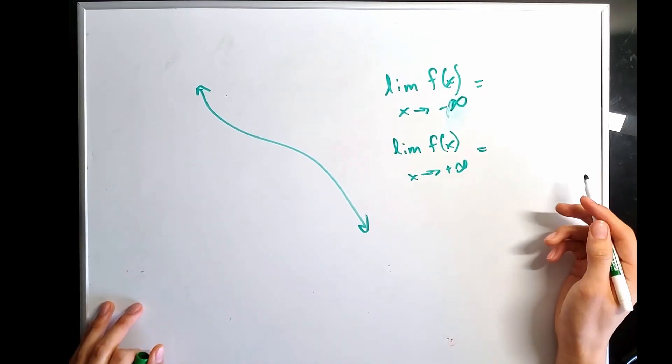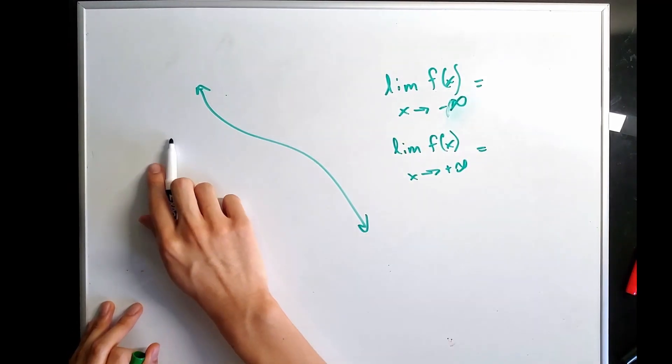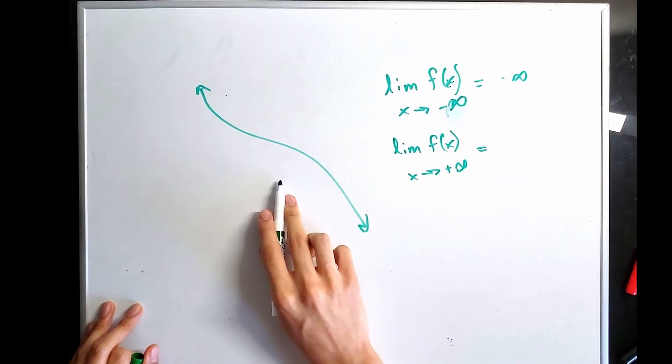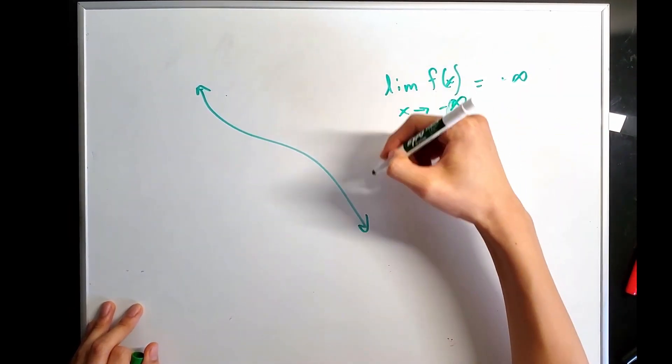End behavior simply defines the end behavior of a function. In this function, as x approaches negative infinity, it approaches positive infinity. As x approaches positive infinity, we approach negative infinity.